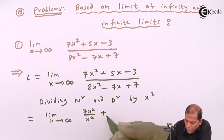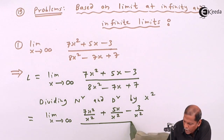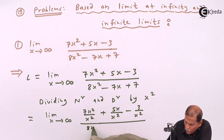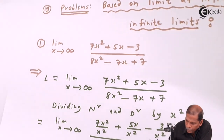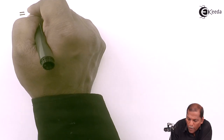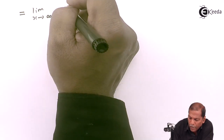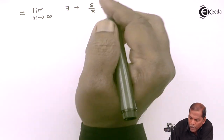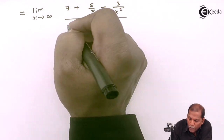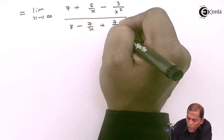That equals the limit as x tends to infinity of: in the numerator, 7x squared upon x squared plus 5x upon x squared minus 3 upon x squared; and in the denominator, 8x squared upon x squared minus 7x upon x squared plus 7 upon x squared. This simplifies to the limit as x tends to infinity of 7 plus 5 upon x minus 3 upon x squared, upon 8 minus 7 upon x plus 7 upon x squared.